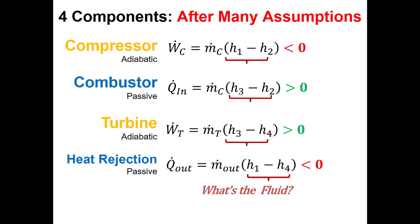With these assumptions we get equations where power terms are m-dot times h-in minus h-out and heat transfer rate terms are m-dot times h-out minus h-in. We can use the first law to determine which processes are positive and which are negative. Getting here demonstrates we understand the thermodynamic part, but we still need numerical answers — either for individual enthalpies or for the difference in enthalpies.